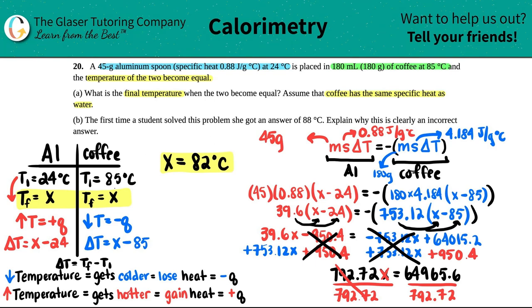For part B: The first time a student solved this problem, they got 88. Explain why this is not the correct answer. We basically went over this. What did we say? The final temperature has to be somewhere between 24 and 85. They got 88—that's clearly why it's incorrect. The final temp can never be higher than 85, and it can never be lower than 24.